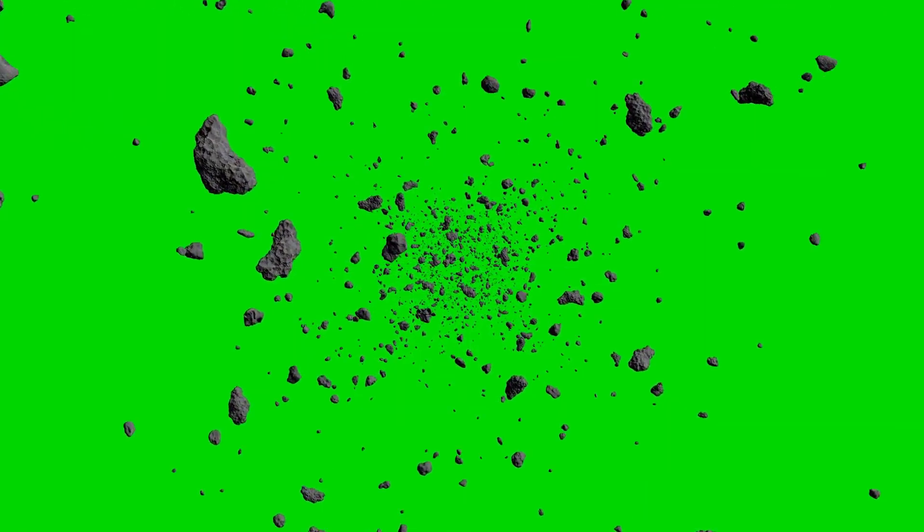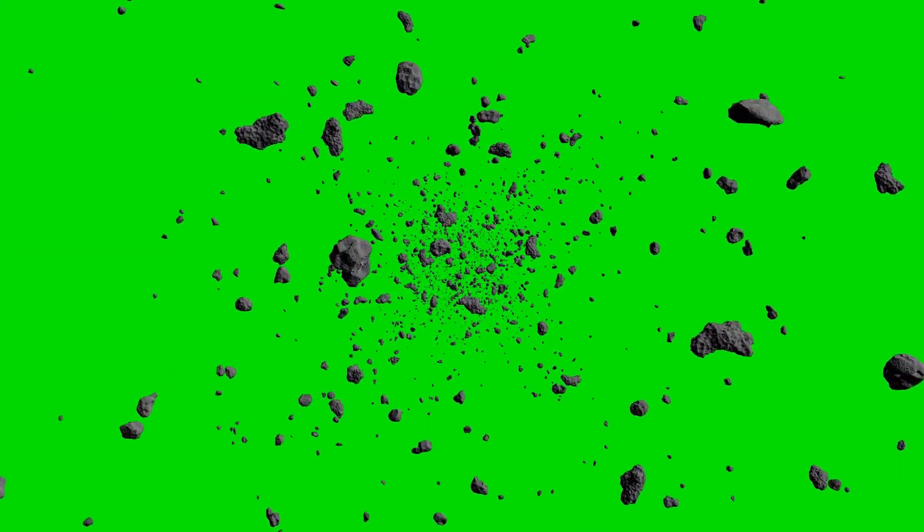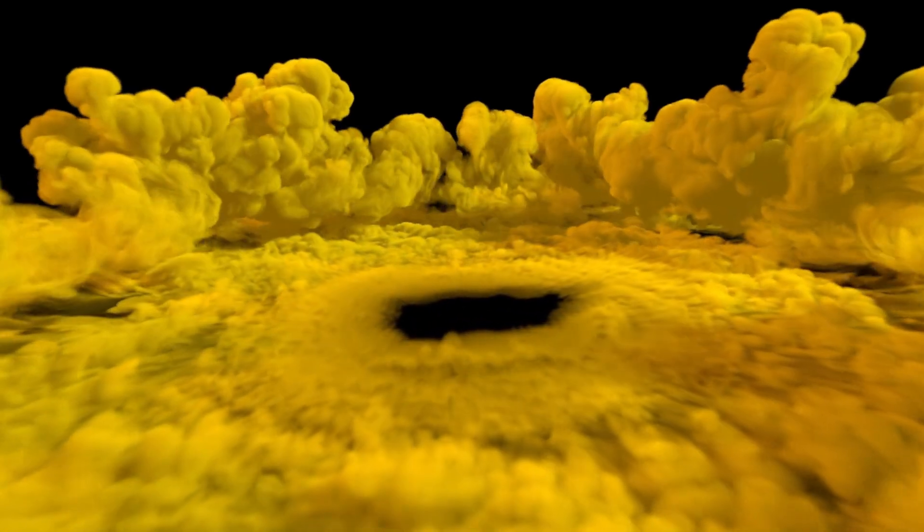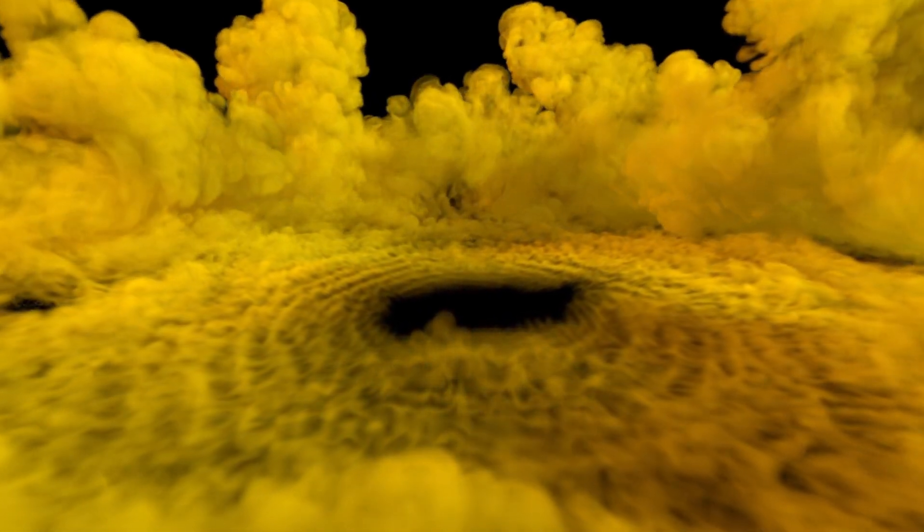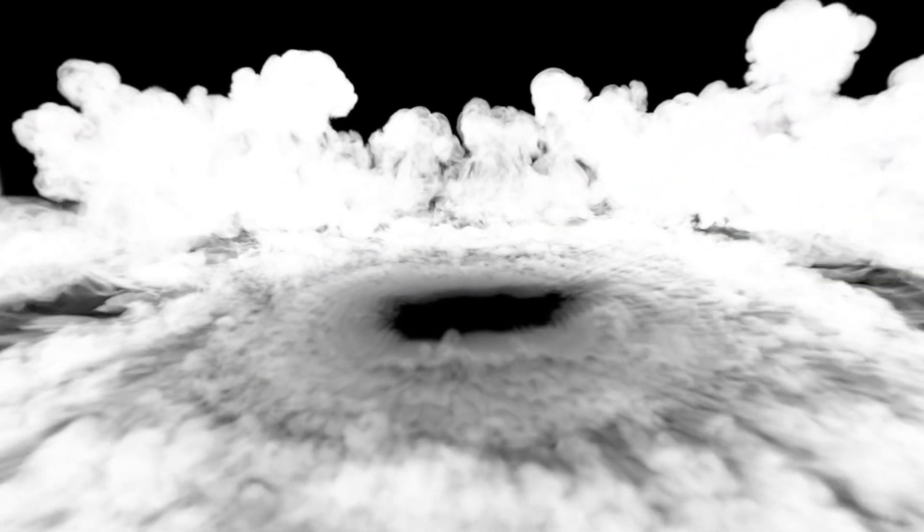The impacts on Jupiter generated fireballs reaching temperatures of over 23,000 degrees Celsius, soaring an astonishing 3,000 kilometers above the planet's limb. The most significant impact left a dark spot spanning 12,000 kilometers, roughly the size of Earth, and unleashed energy equivalent to 6 million megatons of TNT, more than 600 times the power of the world's combined nuclear arsenal.